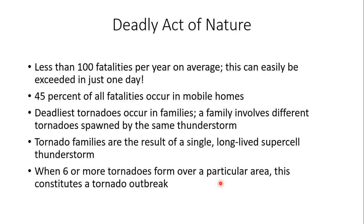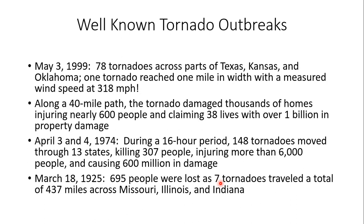When six or more tornadoes form over a particular area, this constitutes a tornado outbreak. The May 3rd, 1999 outbreak produced 78 tornadoes across parts of Texas, Kansas, and Oklahoma. One tornado reached one mile in width with a measured wind speed of 318 miles per hour. Along a 40-mile path, it damaged thousands of homes, injured nearly 600 people, claimed 38 lives, and caused over one billion dollars in property damage.